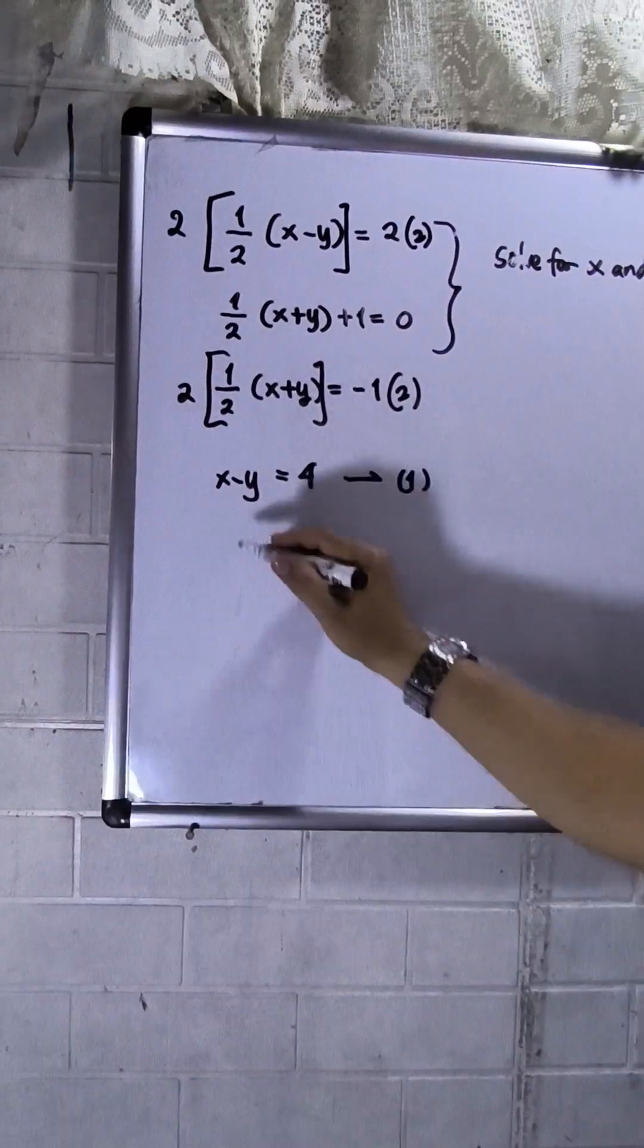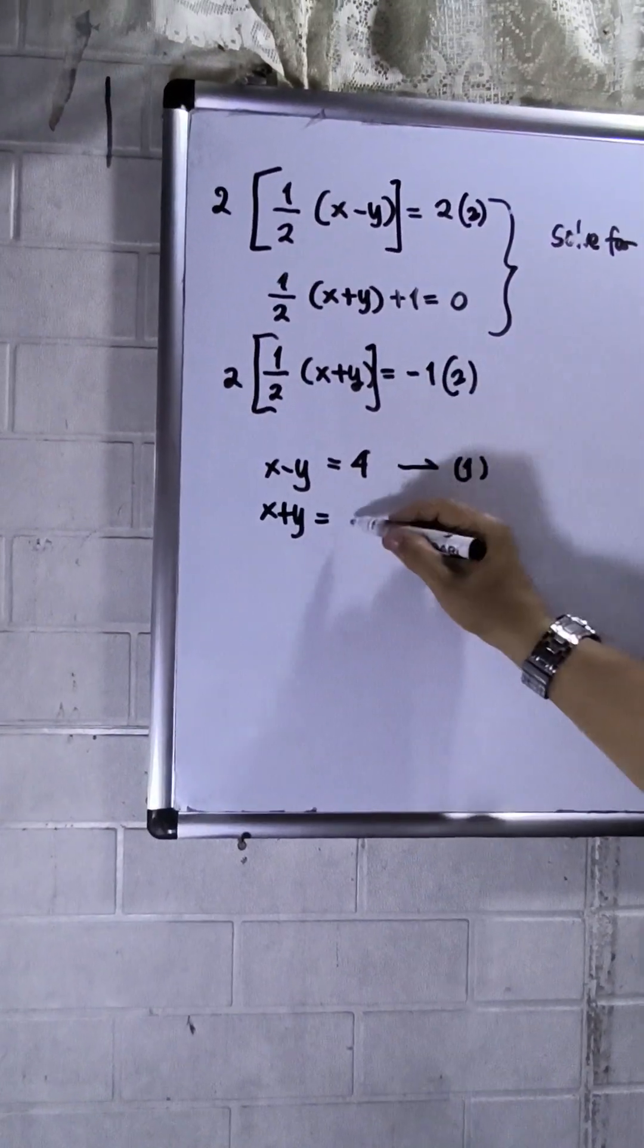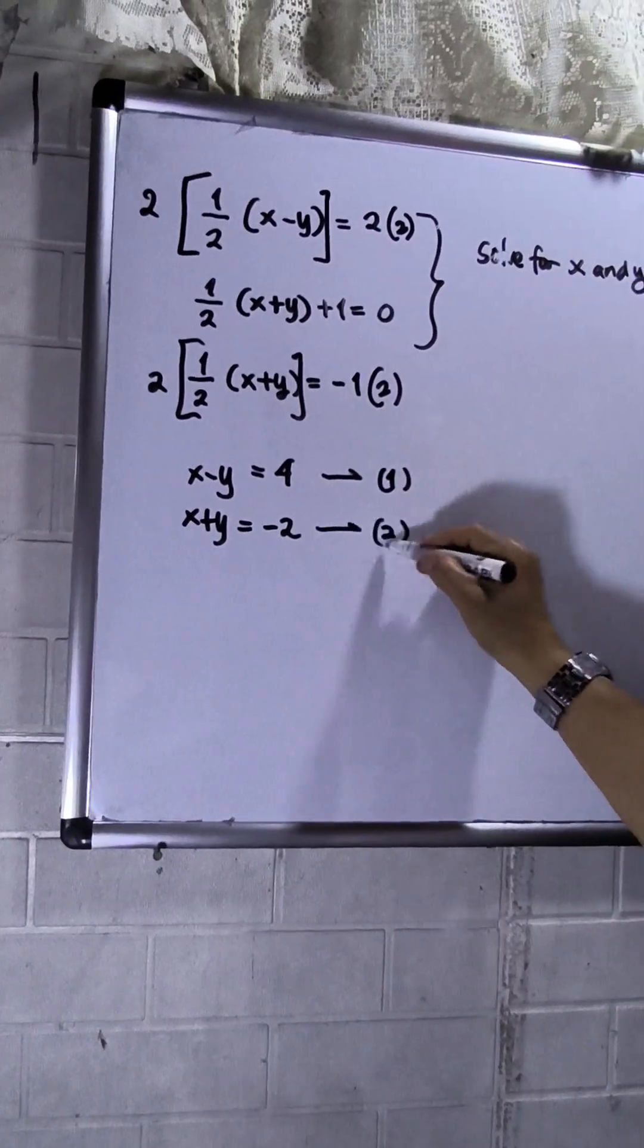And then for equation 2, so this will be x plus y is equals to negative 2. So this is now my second equation.